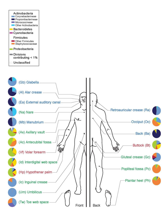The human microbiota is the aggregate of microorganisms that resides on or within any of a number of human tissues and biofluids, including the skin, mammary glands, placenta, seminal fluid, uterus, ovarian follicles, lung, saliva, oral mucosa, conjunctiva, biliary and gastrointestinal tracts.